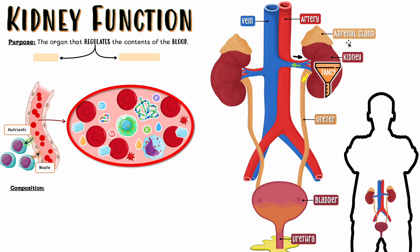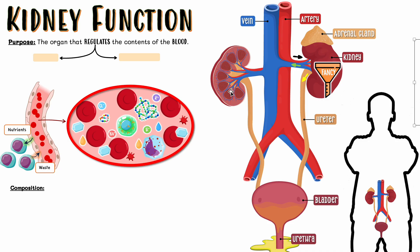There's a little thing sitting on top of the kidney called the adrenal gland. 'Ad' means on top of and 'renal' means kidney, so it's the gland on top of the kidney. It produces the famous hormone adrenaline — the fight-or-flight hormone that gets you all hyped up. It's not too important for this particular video, but it's a key structure to know.